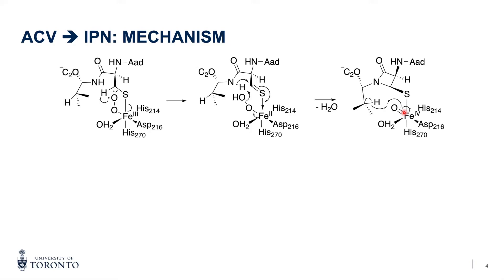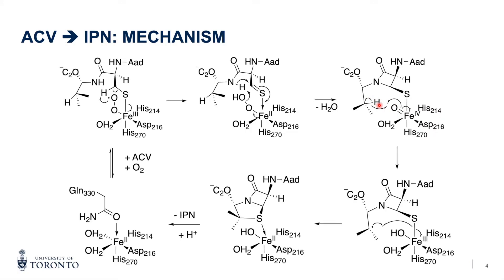And this iron oxo species is known to oxidize many different substrates. The remaining oxygen takes a proton from the tertiary carbon, forming a radical.